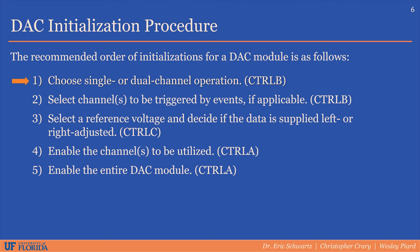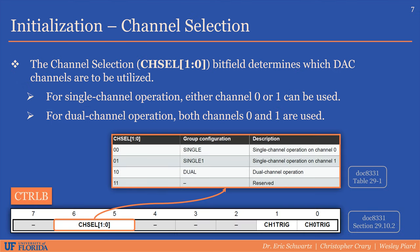Let's start off with the control B register. We can use the channel select bit field to determine if we want exclusively channel 0 or channel 1 to be operational, or alternatively we can use dual channel operation where both channel 0 and channel 1 are enabled at the same time.